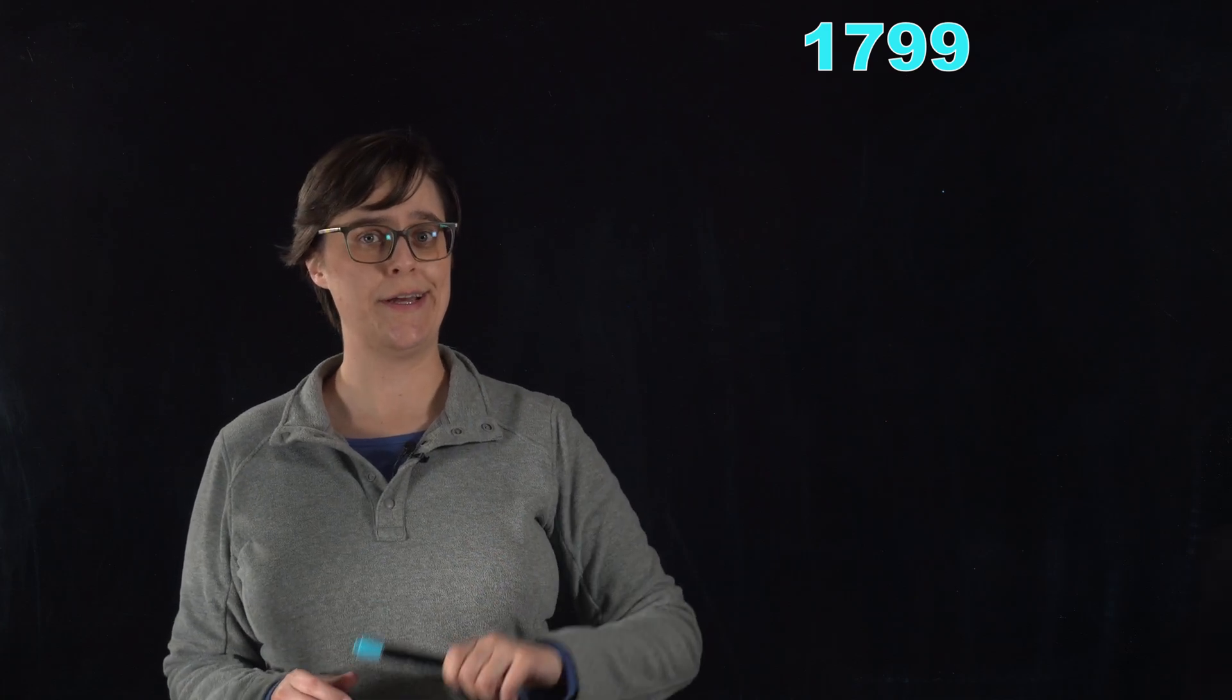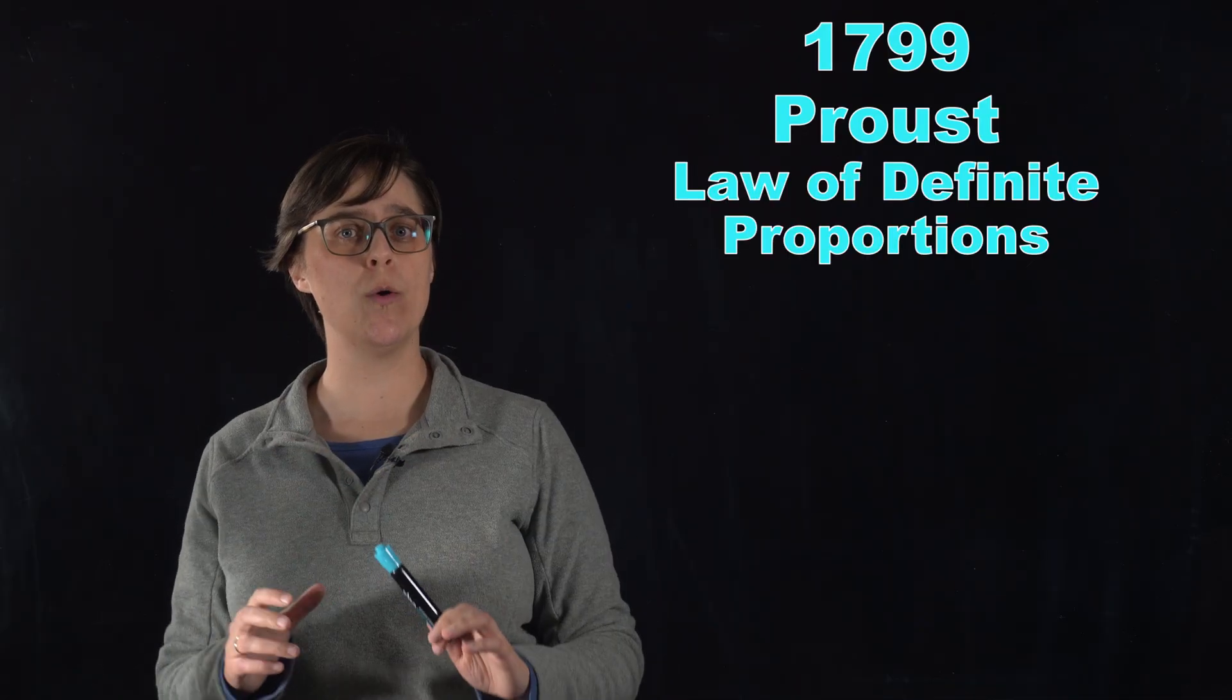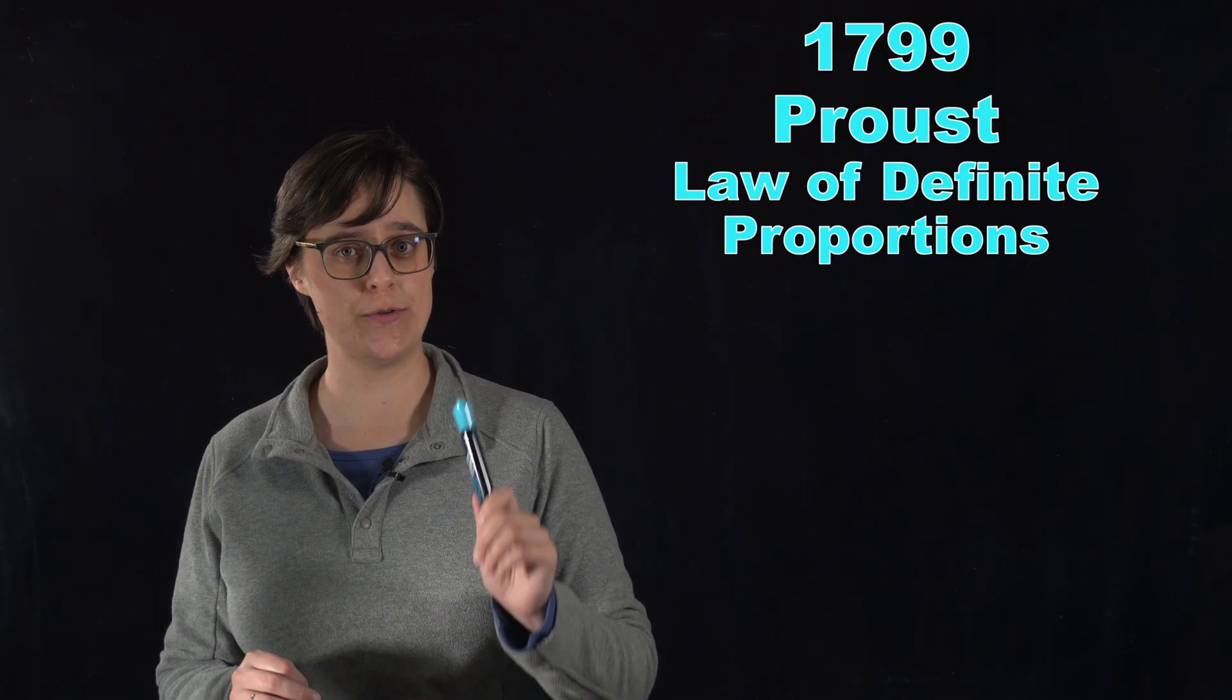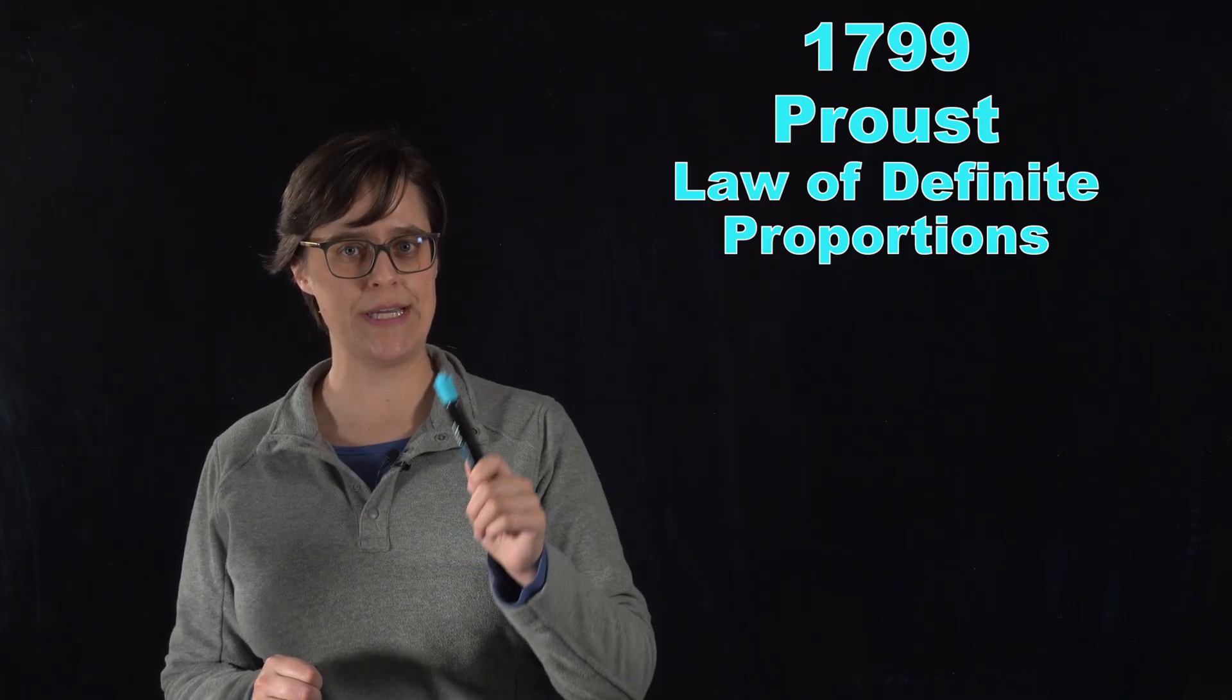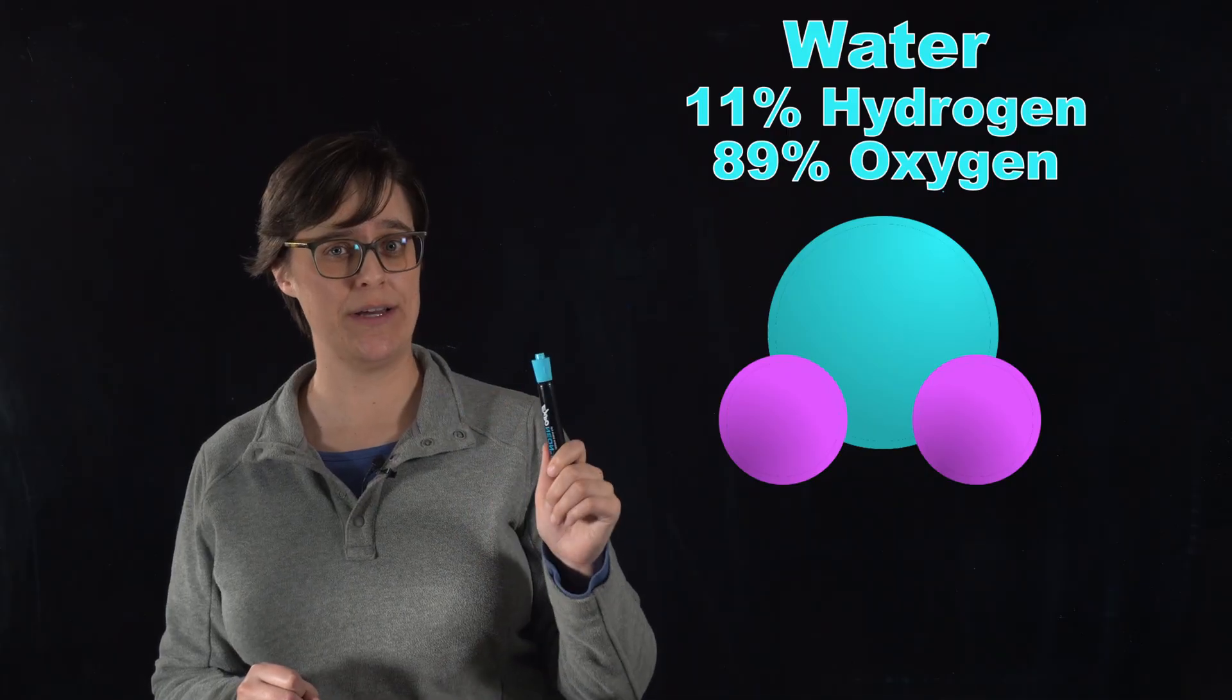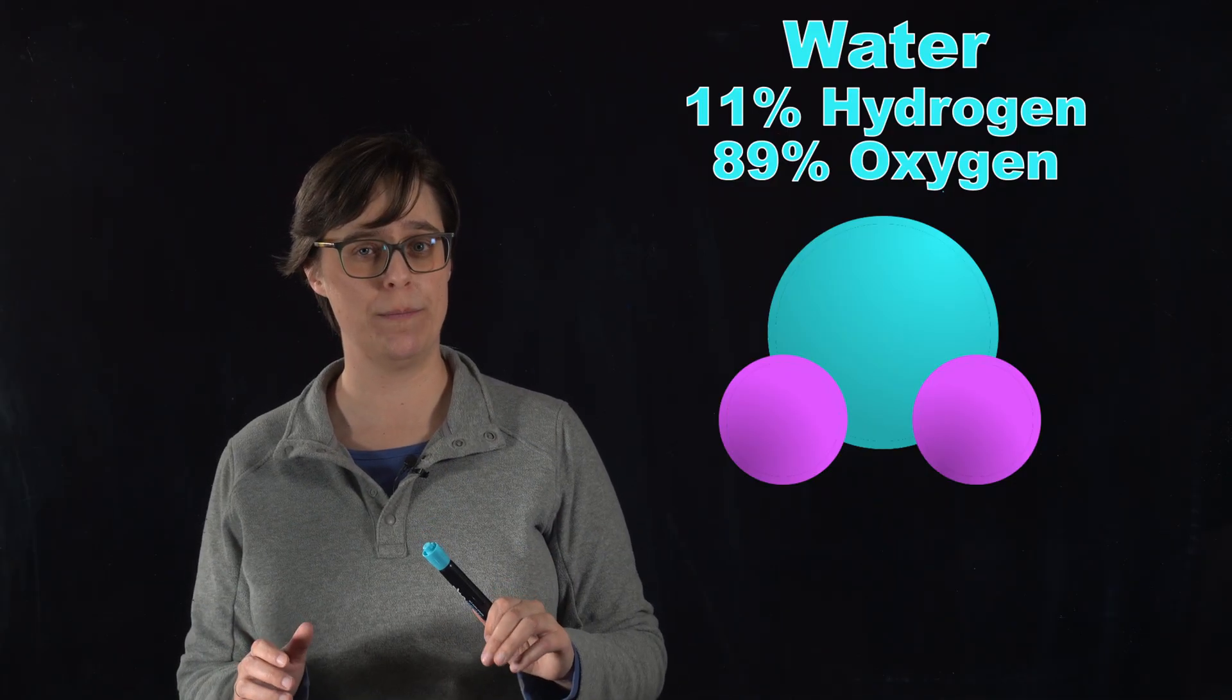The year is now 1799 and Joseph Proust found that chemical compounds always contain the same elements in fixed ratios by mass. For example, water is always 11% hydrogen and 89% oxygen by mass, no matter where you get that water from.